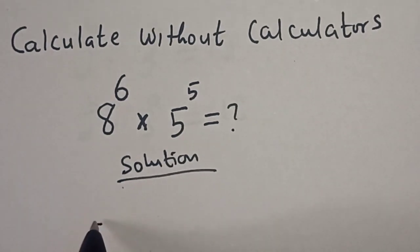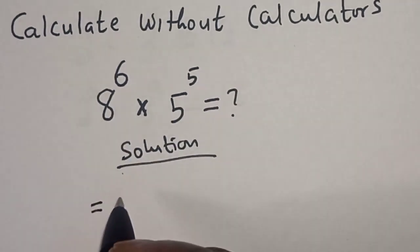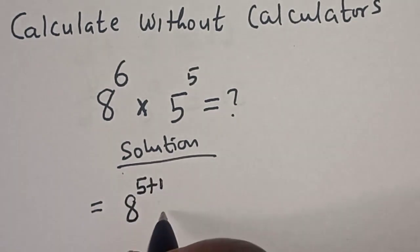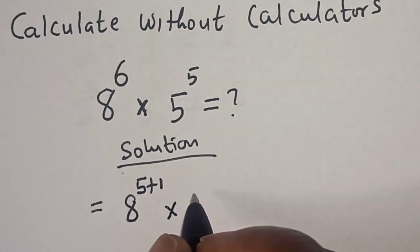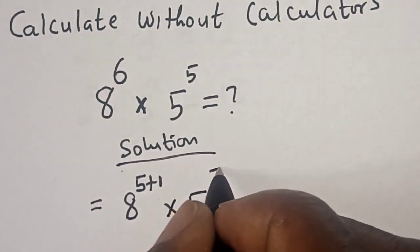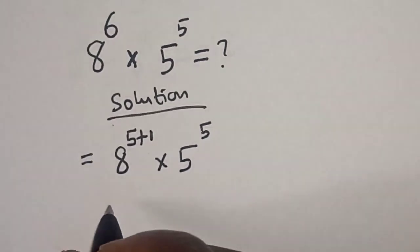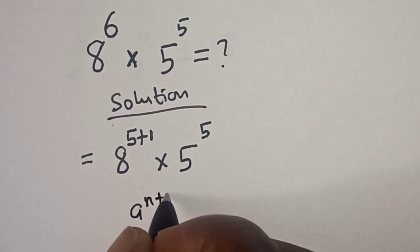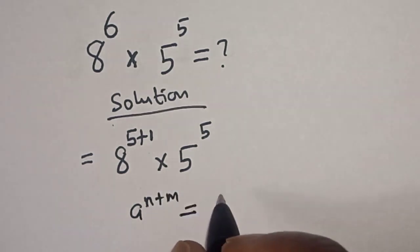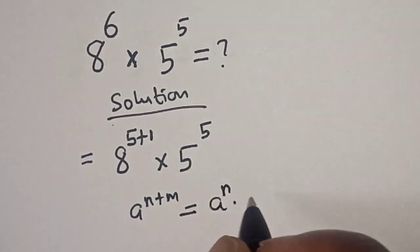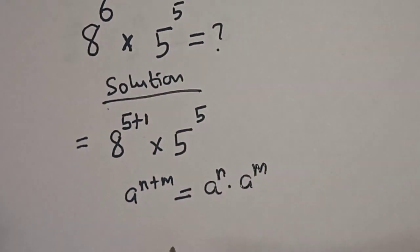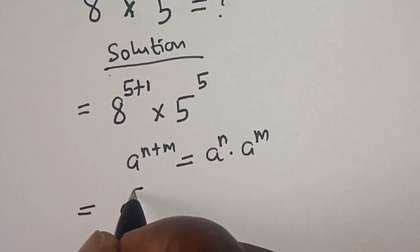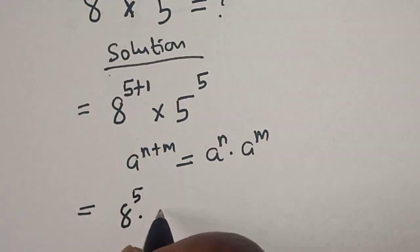We have 8 raised to power 6 multiplied by 5 raised to power 5. This is equal to 8 raised to power 6, which can be written as 8 to the power of 5 plus 1, multiplied by 5 to the power of 5. Remember this rule: a raised to power n plus m is equal to a to the power of n multiplied by a to the power of m.